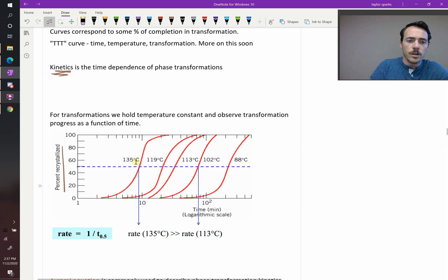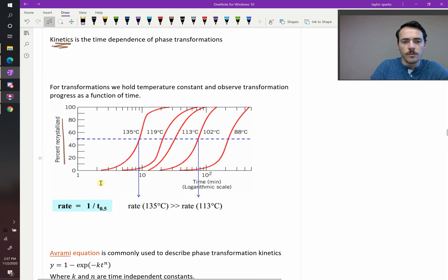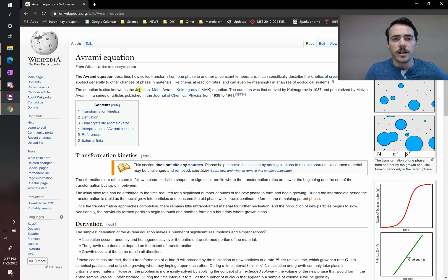So here's an example where they're taking 1 over the time necessary to get to 50% transformed, and they're calling that the rate. Well, we need a better way to do this, and one way to do this is to use the Avrami kinetic equation. It's actually named after four people. The authors were actually Johnson, Mel, Avrami, and Kolmogorov, so the J-M-A-K equation, but it's often just called the Avrami equation.